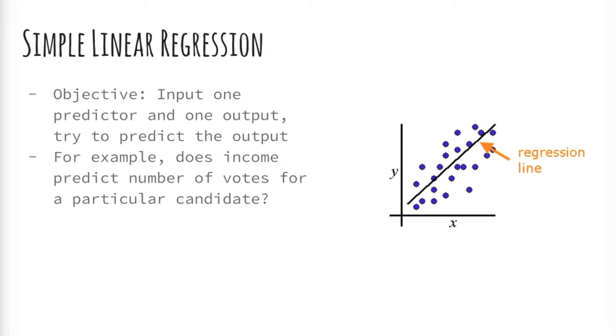In simple linear regression we use one x variable, that is one predictor, to predict an output. In the case of US elections we can try to predict if income of a certain ZIP code predicts the number of votes they will cast for a candidate.